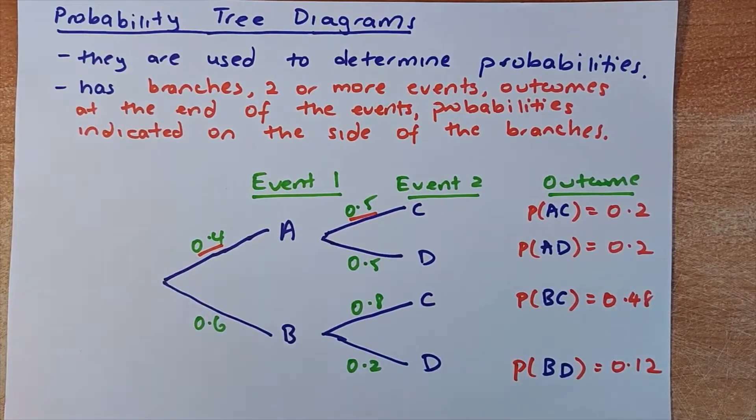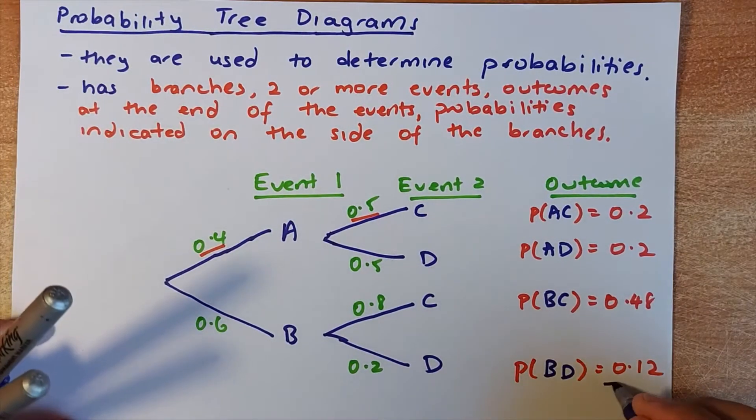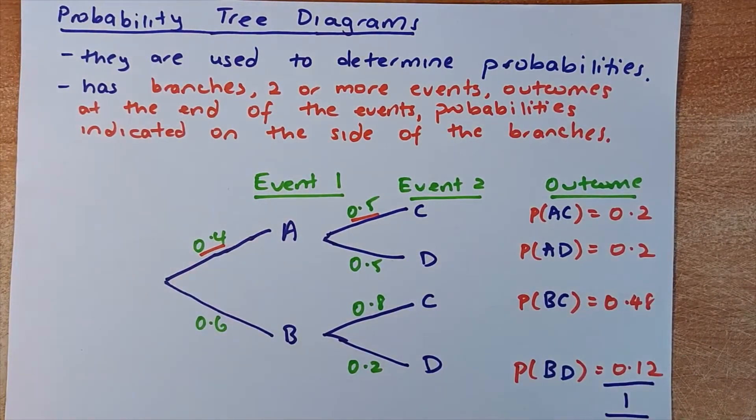The other rule is that all possible outcomes in probability are going to add up to 1. So all this probability is going to add up to 1. And if that adds up to 1, then you are right.